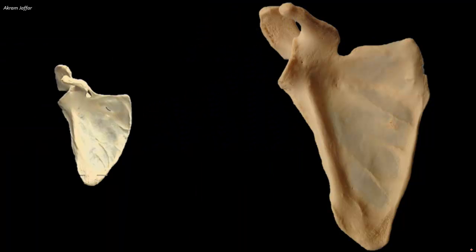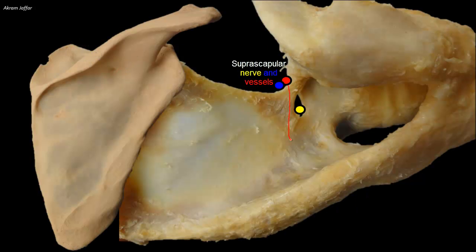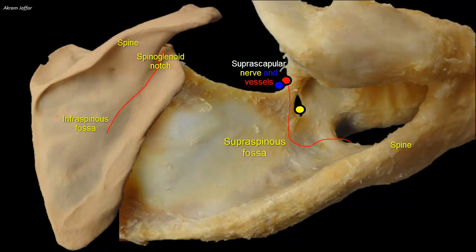Sometimes the transverse scapular ligament is calcified and the notch is converted into a foramen. In other instances, the notch is very shallow or not present at all. The suprascapular neurovascular bundle supplies the supraspinous fossa, then curves around the lateral side of the scapular spine at the spinoglenoid notch to reach and supply the infraspinous fossa.